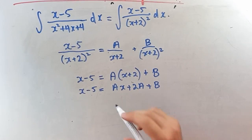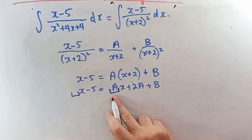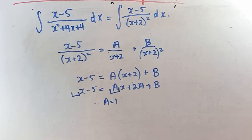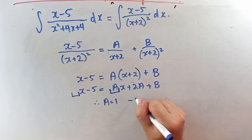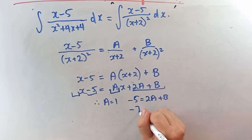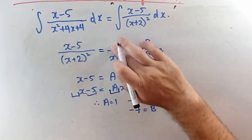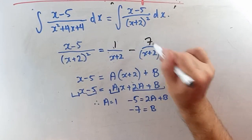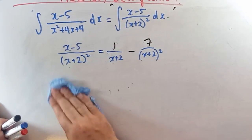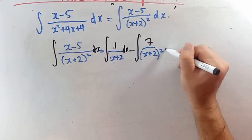Expanding and equating coefficients: the x coefficient gives a equals 1. The constant terms give negative 5 equals 2a plus b. Since a equals 1, we get negative 5 equals 2 plus b, therefore b equals negative 7.